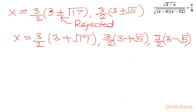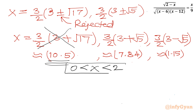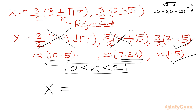Checking approximate values: (3/2)(3 plus root 17) is approximately 10.5, which does not lie in (0, 2) — rejected. (3/2)(3 plus root 5) is approximately 7.84, also not in (0, 2) — rejected. (3/2)(3 minus root 5) is approximately 1.15, which does lie in the interval 0 to 2 — accepted. So our final and only real radical solution is x equals (3/2)(3 minus root 5).